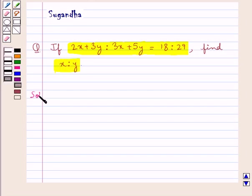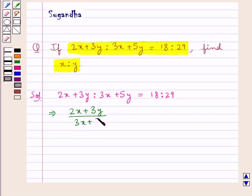Let's proceed with the solution now. We are given the ratio 2x plus 3y is to 3x plus 5y is equal to 18 is to 29. So this means 2x plus 3y upon 3x plus 5y is equal to 18 upon 29. Now further cross multiplying